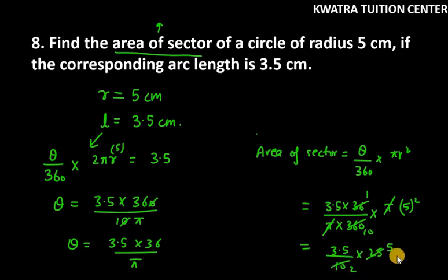This will be 5, this will be 2. 5 and 2 cancel, it will be 2.5. And 2.5 and 3.5 multiply. So your answer will be 8.75 cm².